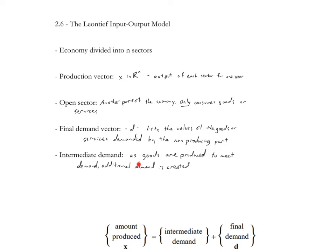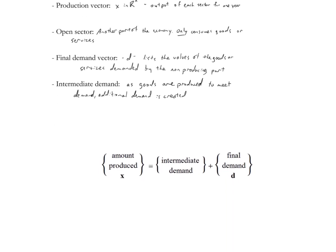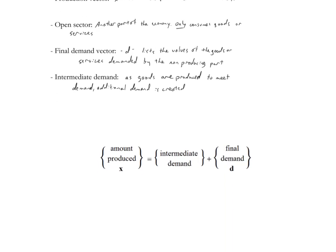And then our intermediate demand is goods that are produced to meet demand. As goods are produced to meet demand, additional demand is needed. So as energy is produced to meet the needs of some other sector of the economy, more energy is needed to continue to produce that additional energy. As more is needed, as more is created, more is needed. And then we define, we have this equation at the bottom here, where the amount produced X is equal to the intermediate demand plus the final demand.